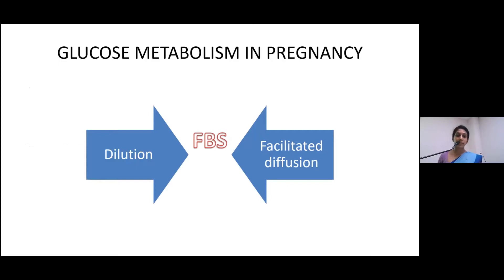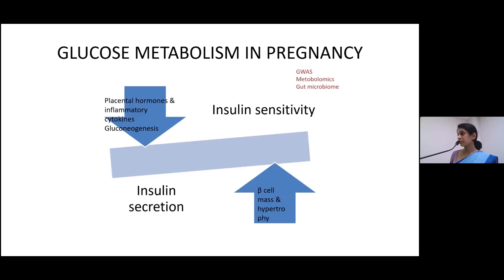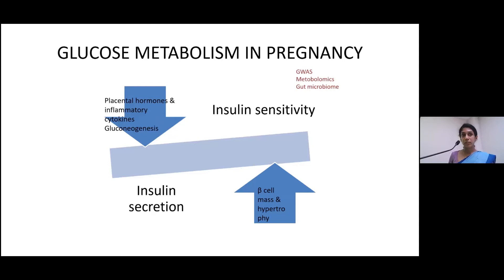What happens to glucose metabolism in pregnancy? Fasting blood sugars are low because maternal glucose is diverted to the baby through a non-insulin dependent way. When pregnancy advances and the placenta is formed, it produces more placental hormones and inflammatory cytokines, which causes reduced insulin sensitivity towards the second and third trimesters. At the same time, maternal hepatic gluconeogenesis is increased — it's a glucose challenge to the mother. The pancreas tries to overcome this insulin resistance by producing more insulin at a lower threshold than in a non-pregnant patient.